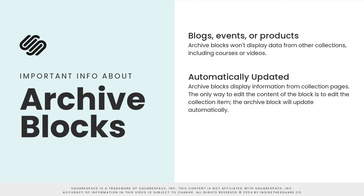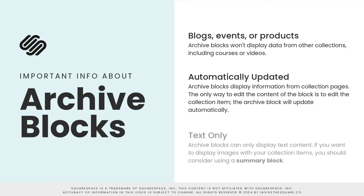You won't be able to edit the text of an archive block, but if you make any changes to a collection page — like changing the title of a blog post — and that blog post is listed in an archive block, the title will be updated automatically. Archive blocks only show text and won't display images like blog post thumbnails.